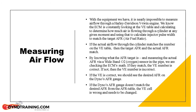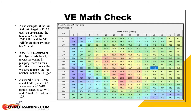We are not actually measuring airflow — we are checking the math the ECM does. As an example, if the air-fuel ratio target is 13 to 1, and you are running the bike at 60% throttle at 2,500 RPM, and the VE cell for the front cylinder has 90 in it — if the AFR measured on the dyno reads 14.5 to 1, it means the engine is pumping more air than the 90 VE represents. So we have to make the VE number bigger. A general rule is 10 VE equals 1 air-fuel ratio point. 14.5 is 1.5 AFR points leaner, so we add 15 to the 90, making it 105.